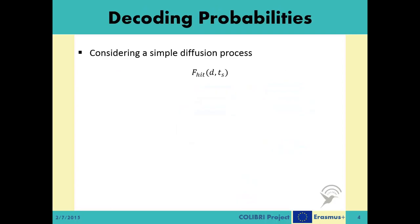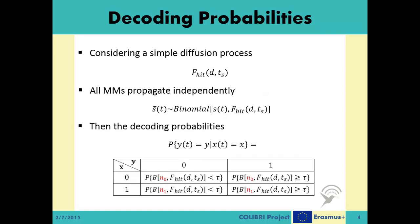When considering a simple diffusion process where all messenger molecules propagate through the environment independent from each other, we can say that S̄t, the number of messenger molecules hit at the receiver within a single symbol duration is a binomial random variable with St and Fhit, reflecting the number of independent trials and each individual messenger molecules hitting probability.